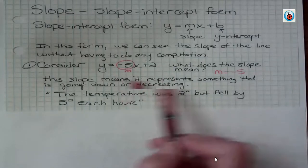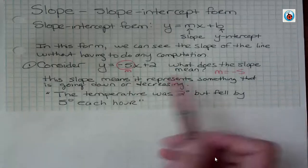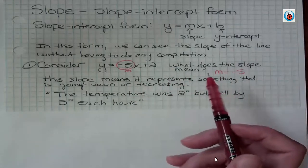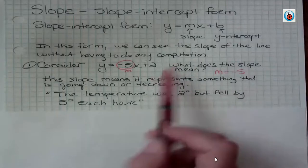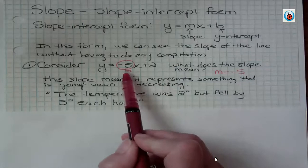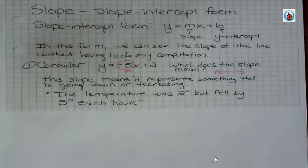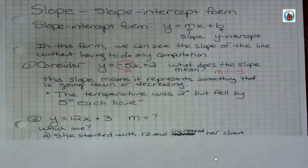It fell by 5 degrees each hour. That's one thing I could say to explain this function. We could also say they started off with $2 and lost $5 a month. That means you're going into debt, right? But we can always talk about a negative as something that's falling or decreasing every month.